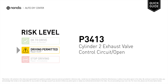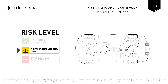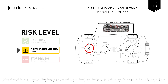P3413 is a diagnostic trouble code for cylinder 2 exhaust valve control circuit, or open. Under this circumstance, short distance driving is permitted, but your vehicle should be repaired ASAP. It indicates the ECM has detected improper voltage or resistance within the cylinder 2 exhaust valve control circuit.